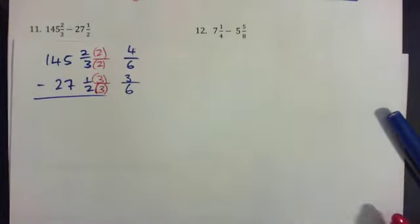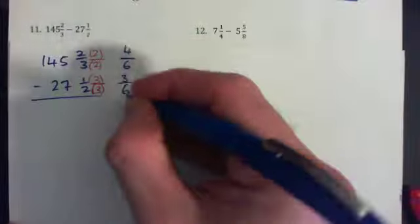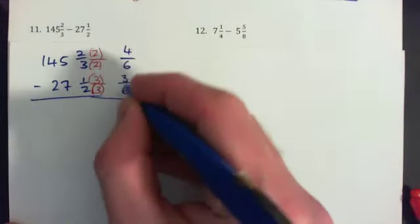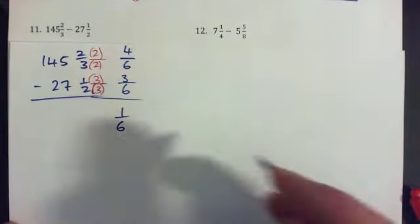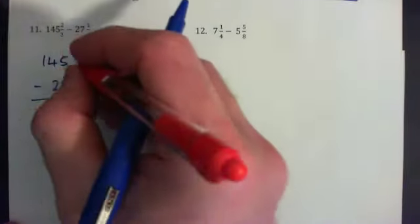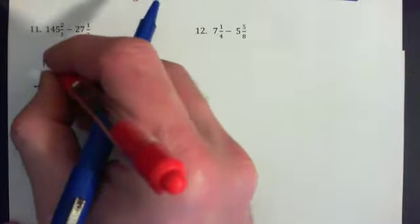These fractions are going to subtract, so 4/6 minus 3/6 is going to give us 1/6. Then 145 minus 27, and I need to do a bit of borrowing here.